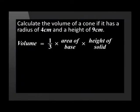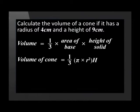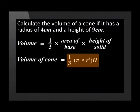The base is a circle so the formula for the volume of a cone is equal to a third open brackets pi times the radius squared close brackets times the height.